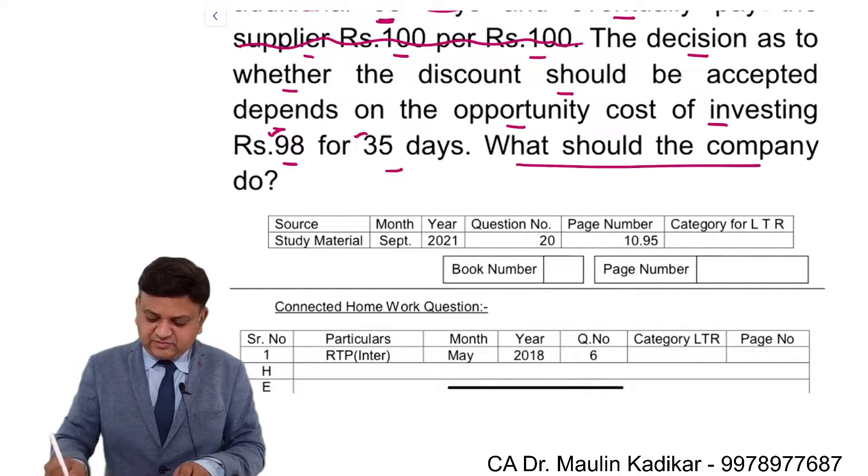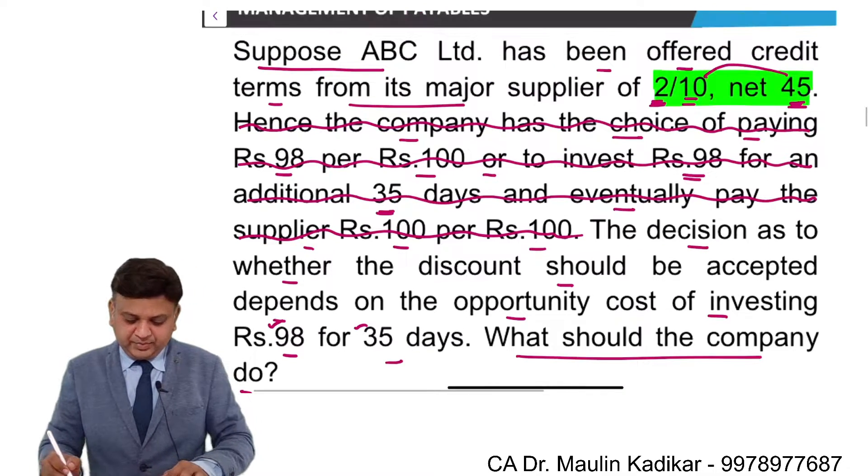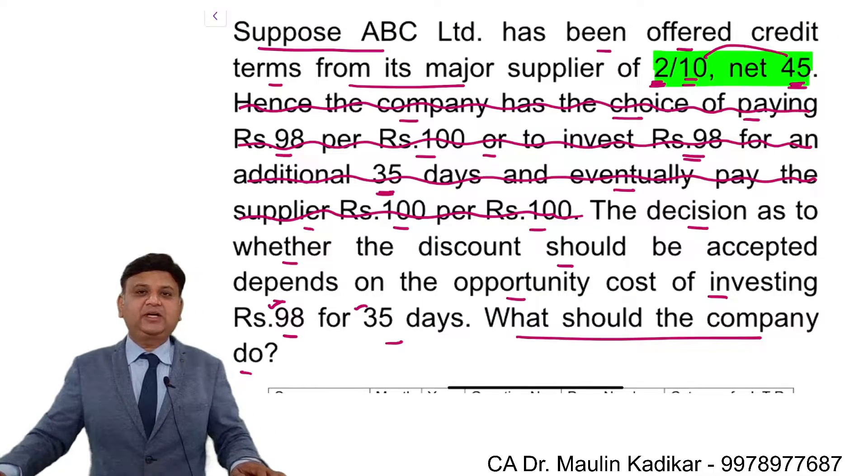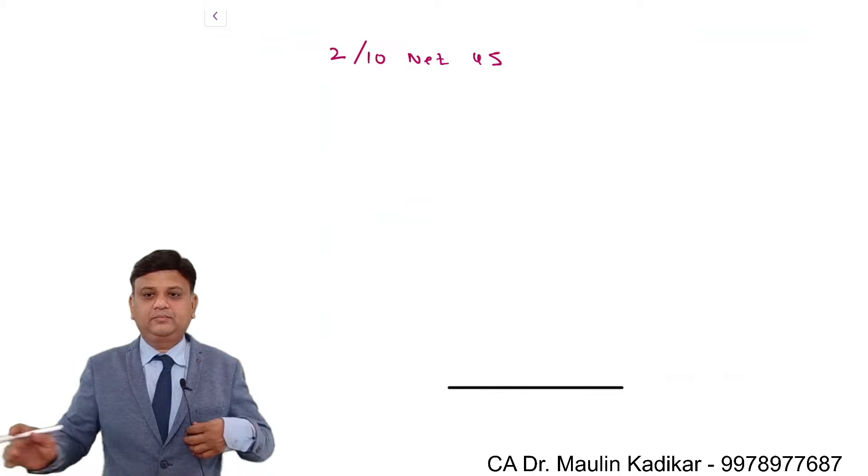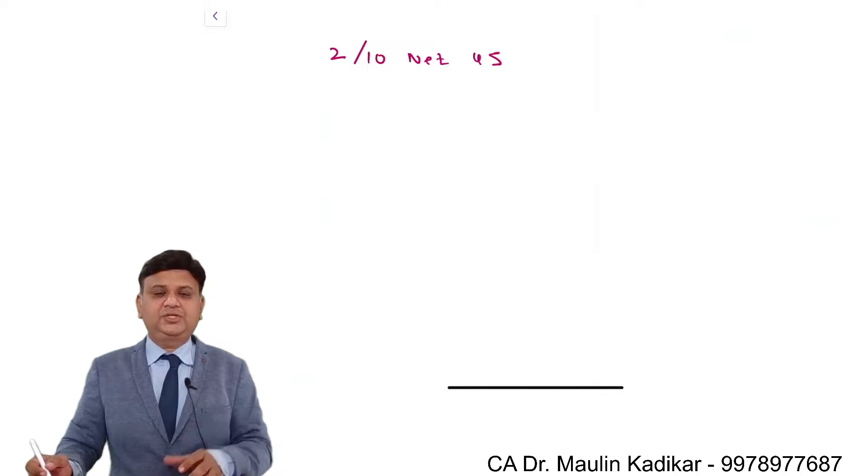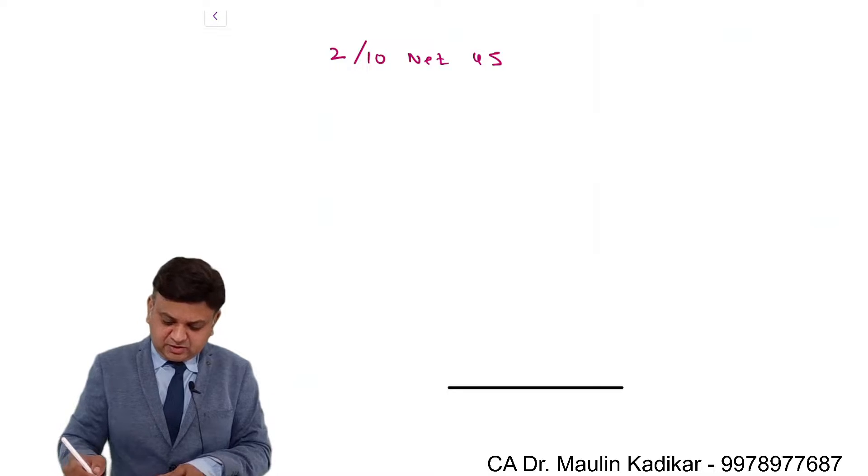The question says what should the company do? So based on this information, we are required to decide what the company should do. Friends, over here, we can first of all make the calculation, what is the advantage of availing cash discount. I request all of you to write down answer along with me.